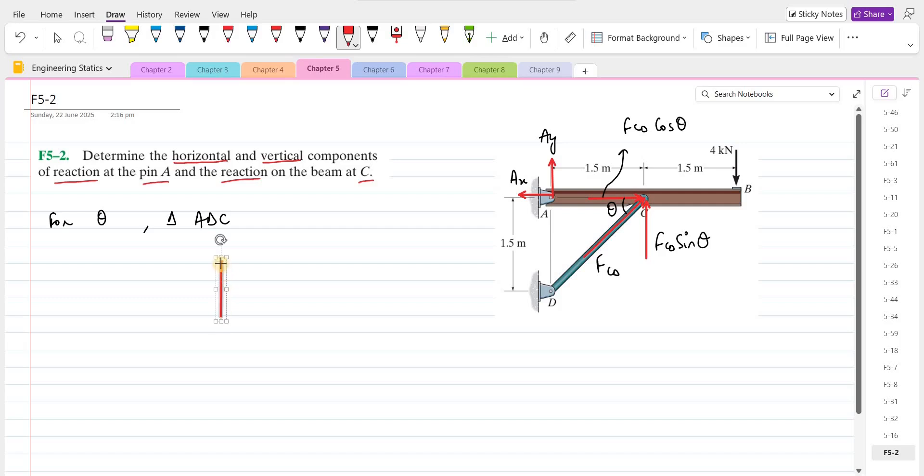If I draw it separately, then it would look something like this. This is A, this is D, and that's C. This angle right here is theta. This side is 1.5 meters and the height is also 1.5 meters. For the angle theta, we can do tan theta is equal to opposite, which is 1.5, over the adjacent, which is also 1.5. Theta comes out to be 45 degrees.